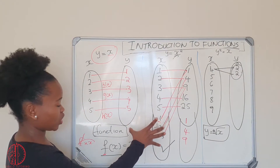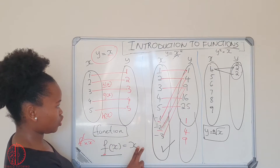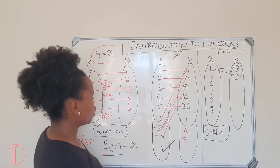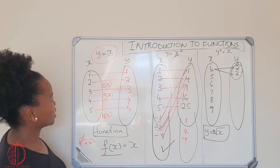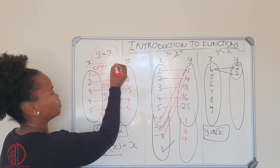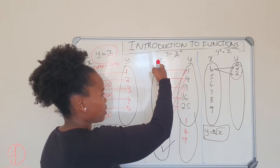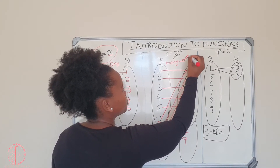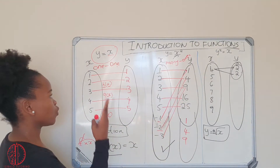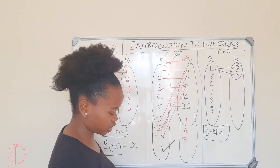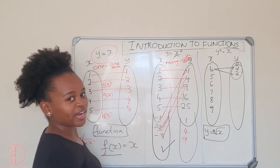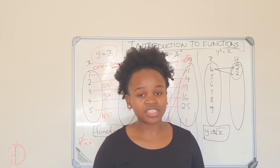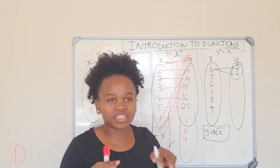From these examples, you can already see there are different types of functions. In the first example, each input mapped to a unique output — that's a one-to-one function. In the second example, two different x values mapped to the same output — that's a many-to-one function. So we have two types: one-to-one and many-to-one, both of which have exactly one output per input.